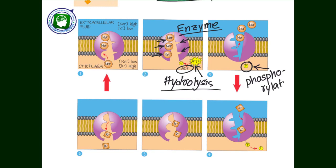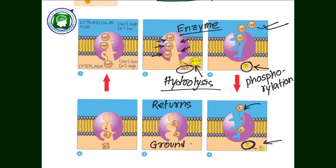The phosphorylation of the protein changes its energy state, resulting in a three-dimensional configuration change in the pump protein, thereby releasing three sodium ions outside. Meanwhile, two potassium ions attach to the protein and dephosphorylation occurs — the inorganic phosphate is removed. The protein returns to its ground state, releasing two potassium ions inside.